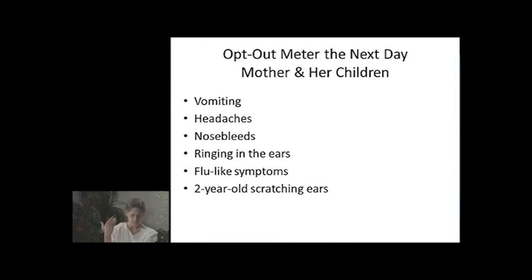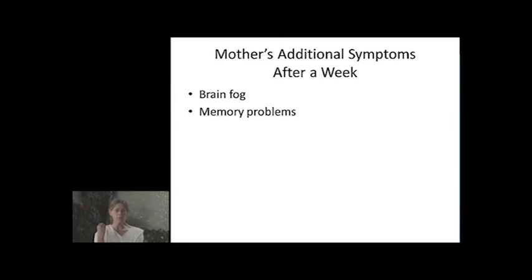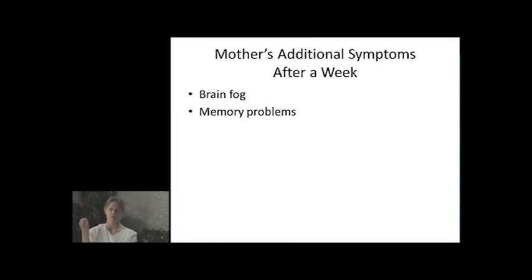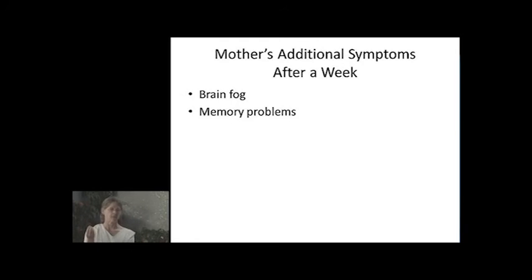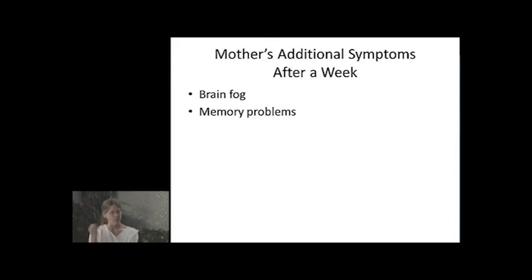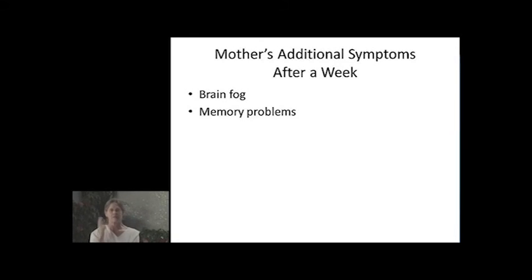The mother began to experience brain fog and memory problems — she's 32 years old. Her husband thought it was probably all in her head. That's what usually happens in a family — one member who's not experiencing it is skeptical. Usually it's the women who are more affected than men; there's no doubt about that. But then what happens is they start spending more time at home, and a lot of them become affected as well. That's what happened to him.